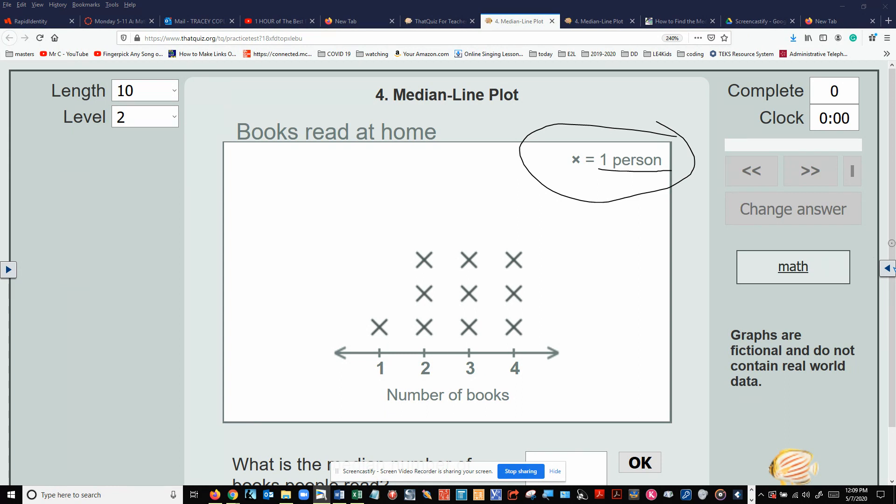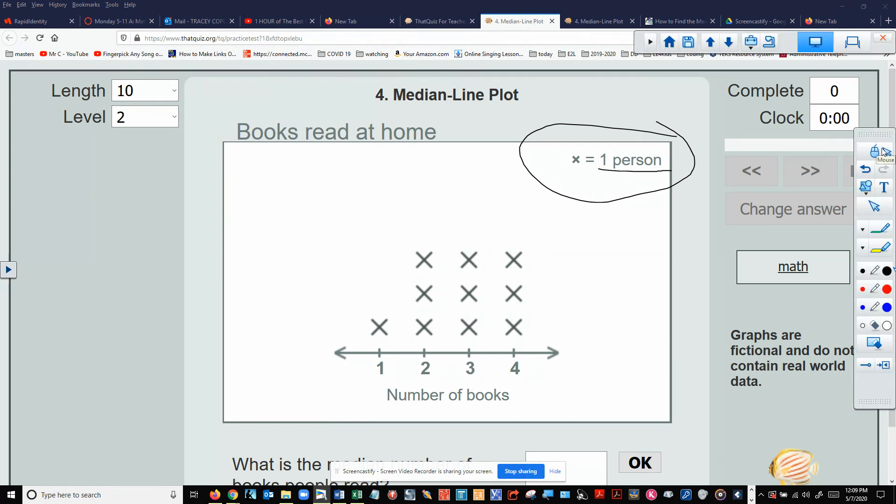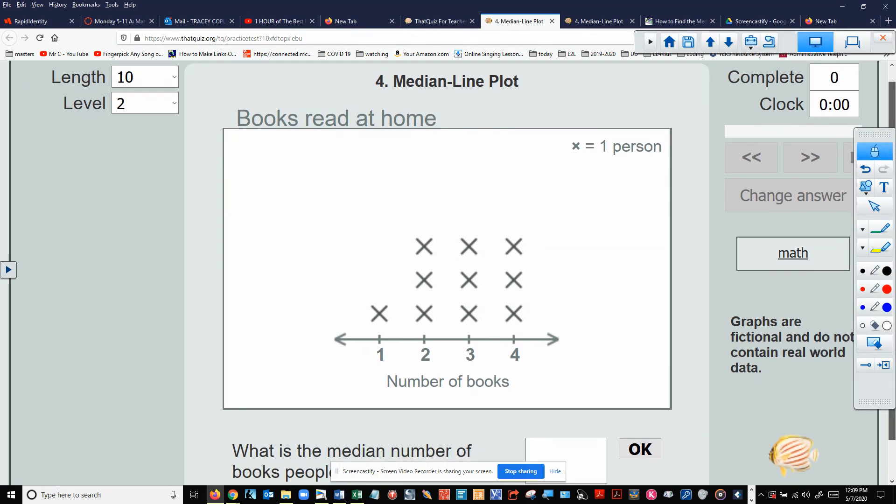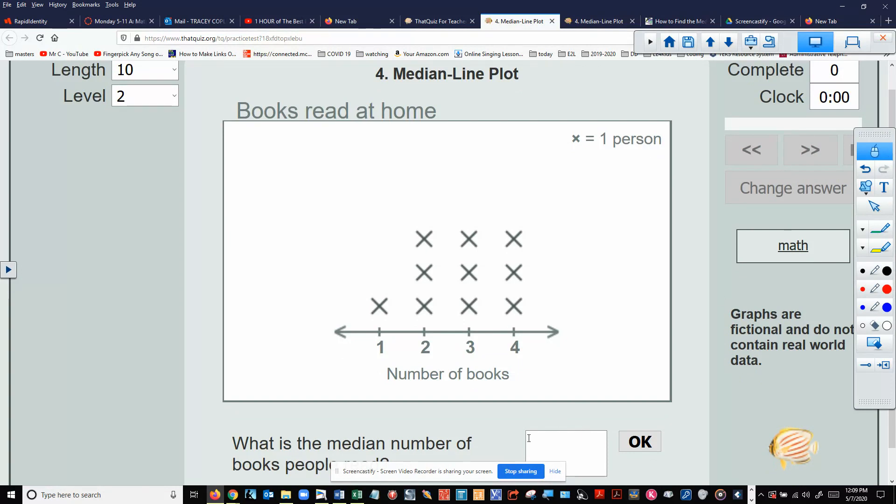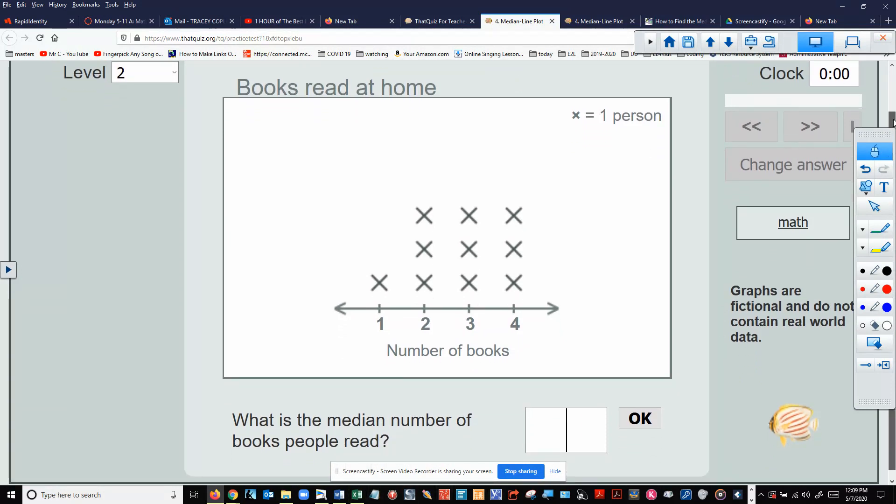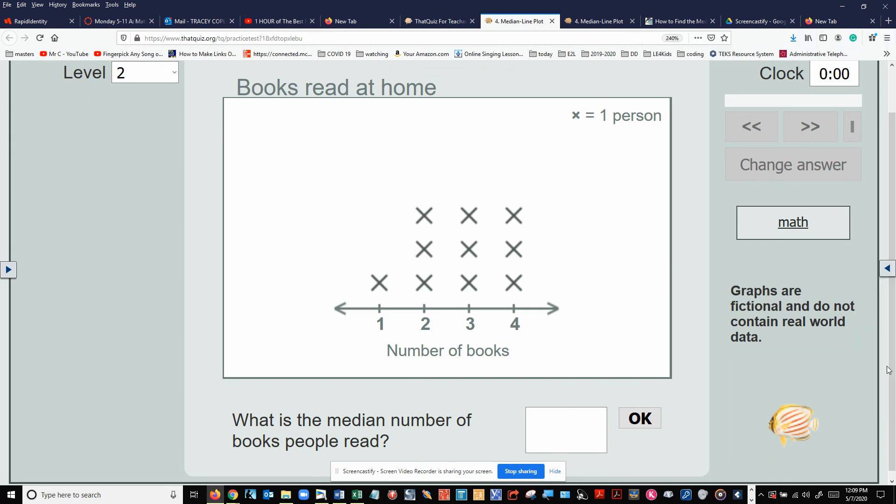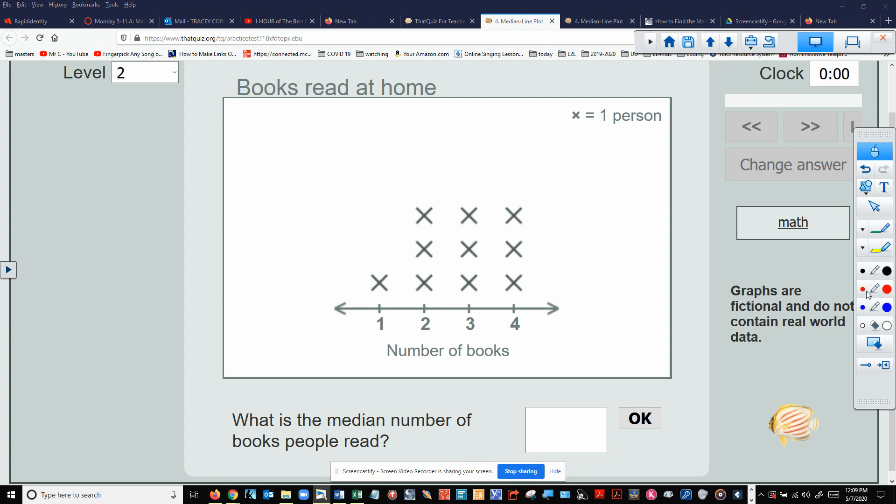So, let's look at this. The question is going to be important, so I probably ought to move that up just a little bit so that you can see where the question is. Now we can see the question a little bit better. It is asking us what is the median number of books. So, it wants us to tell it the number of books.